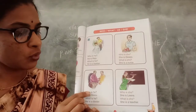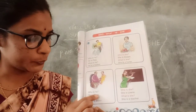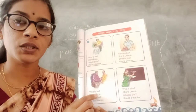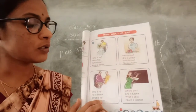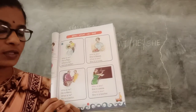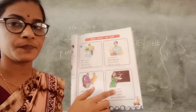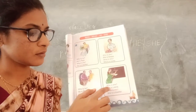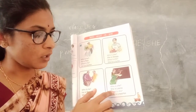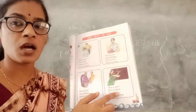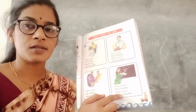Next. Who is he? He is Manu. What is he? He is a Doctor. Next one children. Who is she? She is Lina. What is she? She is a Teacher.